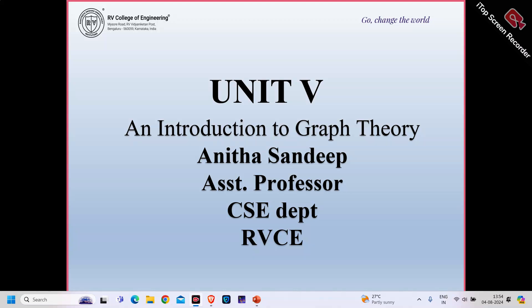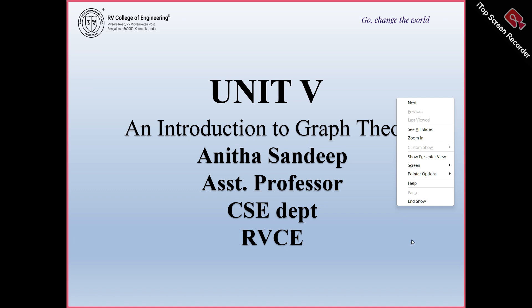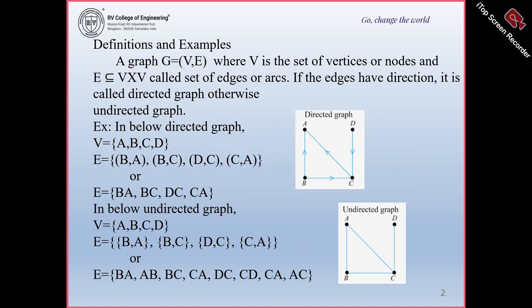We are going to start with our introduction to graph theory. Coming to the definition, a graph G is equal to V, E, where V is the set of vertices or nodes and edges are the subset of V cross V, which are also called as arcs.